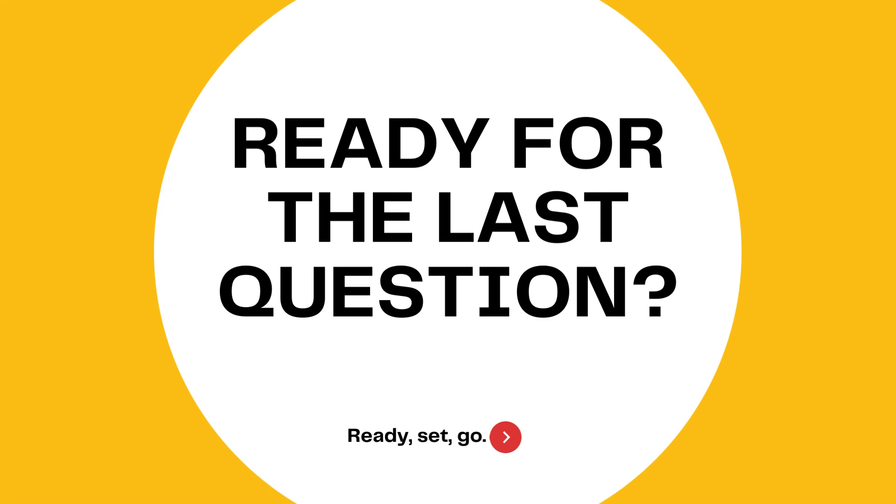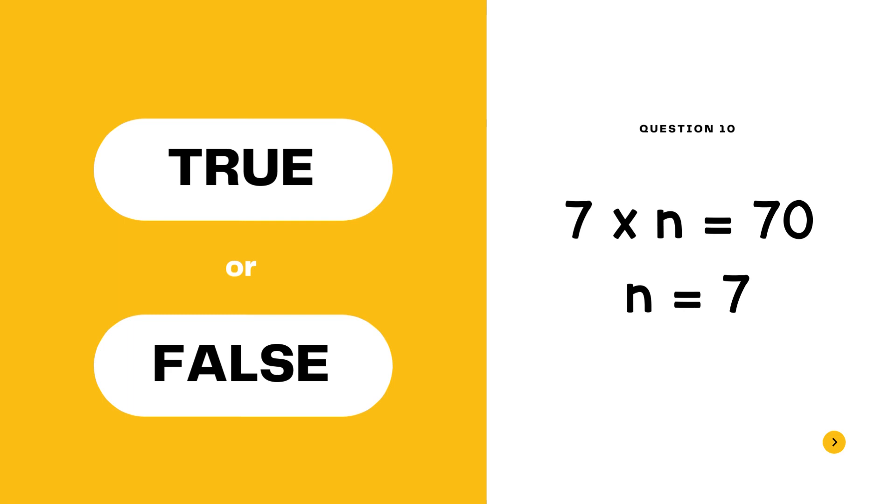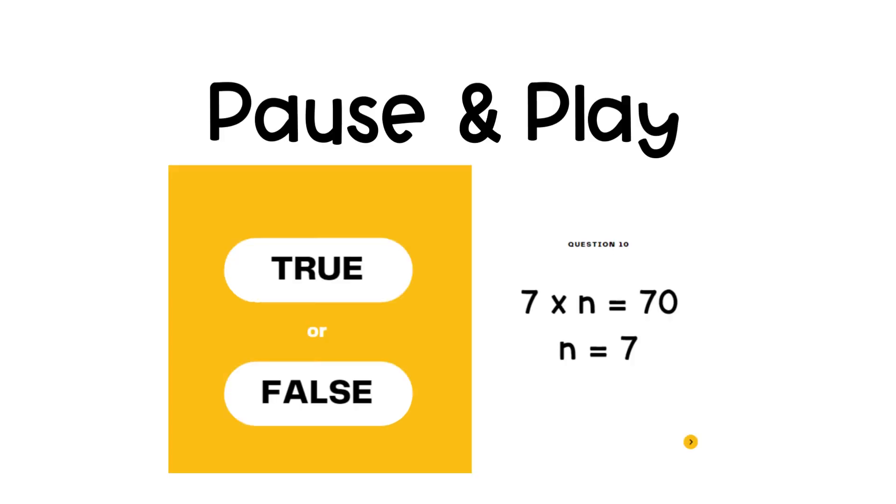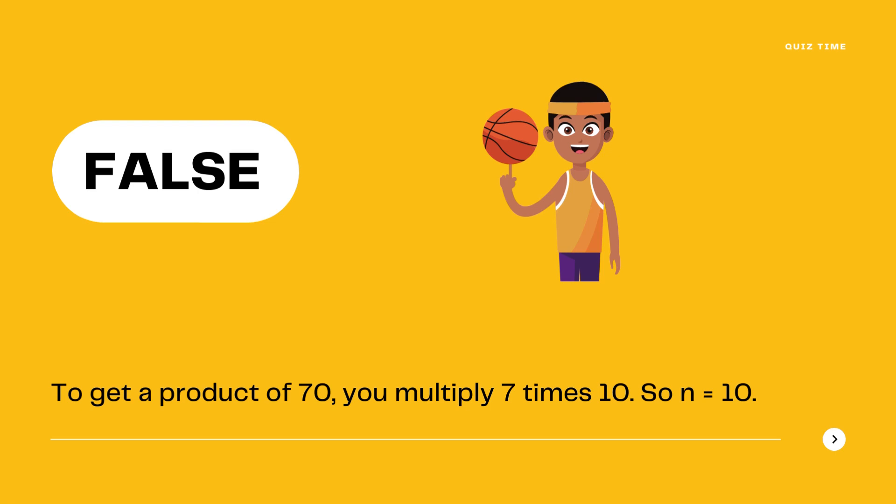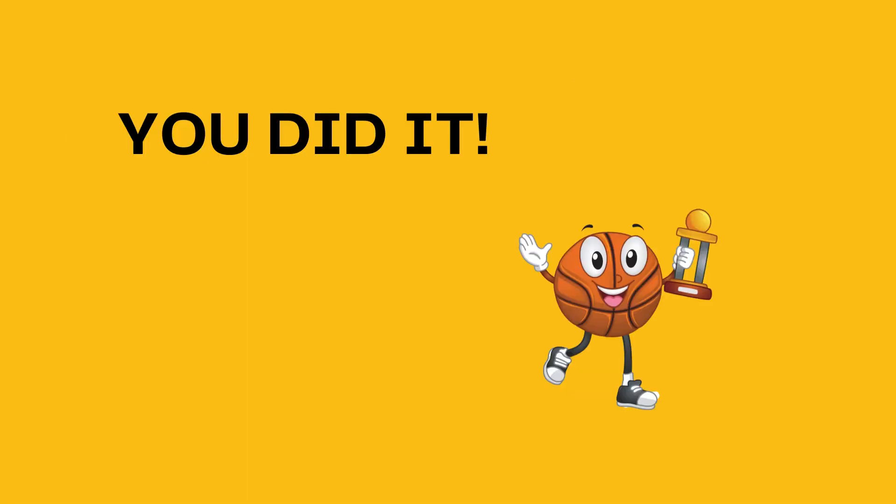Ready for the last question? Ready, set, go. Question 10: 7 times N equals 70, so N equals 7. True or false? Press pause here, and then press play when you have your answers ready. The answer is false. To get a product of 70, you multiply 7 times 10, so N would equal 10. You did it!